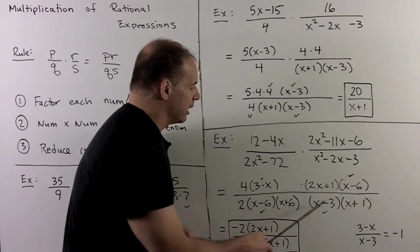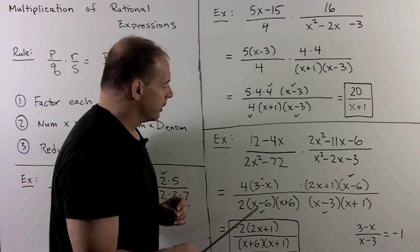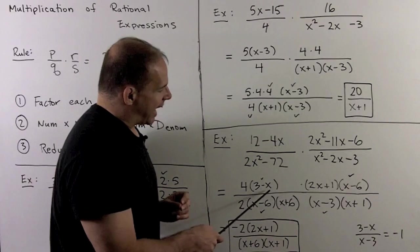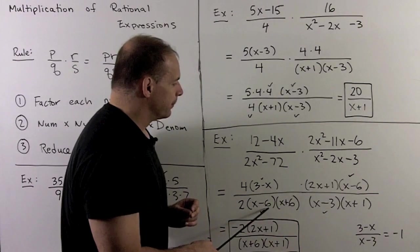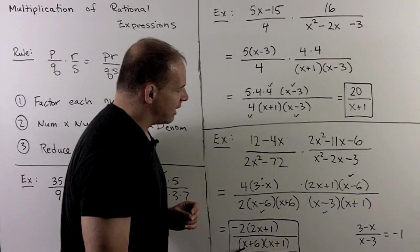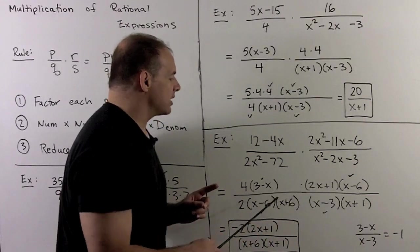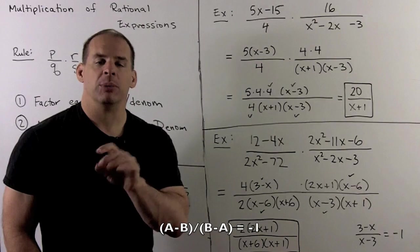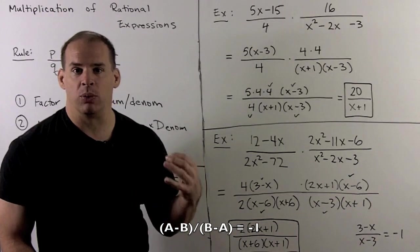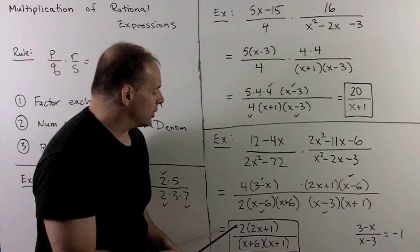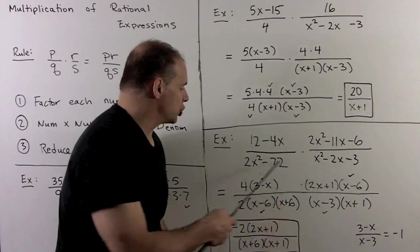Now, these factor, so we start canceling. So what do we know? 4 over the 2 becomes a 2. The 2x plus 1 doesn't cancel, so we save it. The x minus 6 cancels with this x minus 6. The x plus 6 here is not going to cancel, so we save it. x plus 1 here, we save. x minus 3 with a 3 minus x. We could just take it as a rule. If you have a minus b over b minus a, that's equal to a minus 1. So they cancel, leaving me with a minus 1. That's going to give me a minus 2, 2x plus 1 over x plus 6, x plus 1. We did a bit of canceling, so we know that's our check and our work.